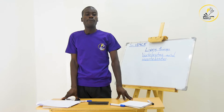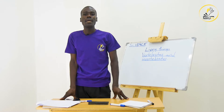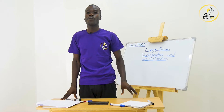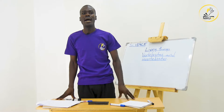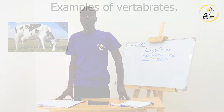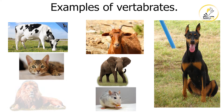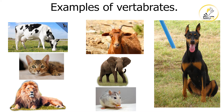Examples of vertebrates: number one is the person standing in front of you — that's man. Man is a special example of vertebrates. We also have other animals like cow, goat, sheep, rat, cat, dog, elephant, rhino, and buffalo. You can name the rest — those are examples of vertebrates.